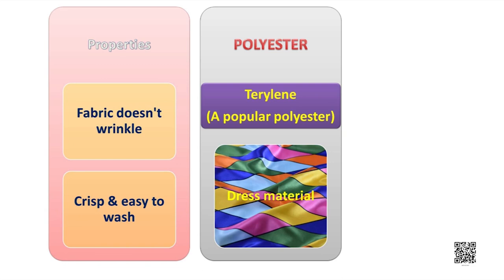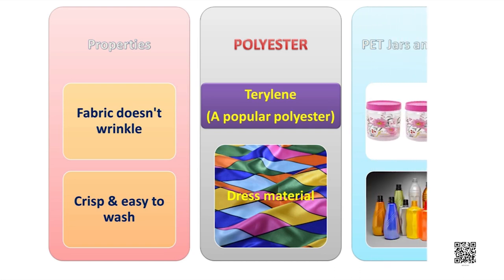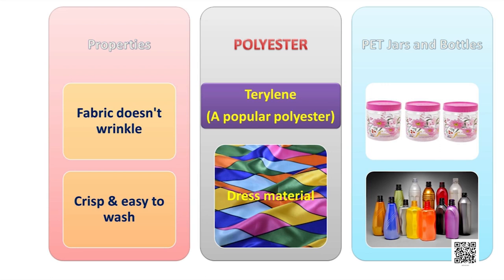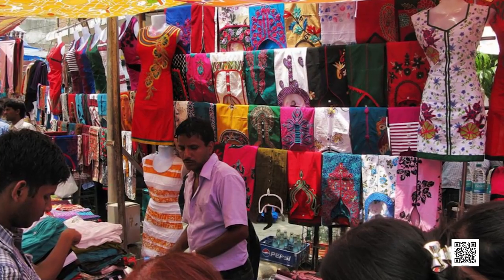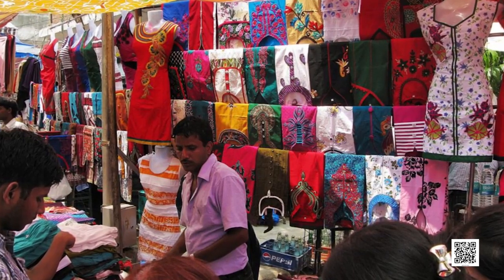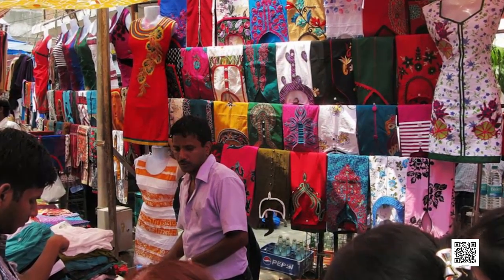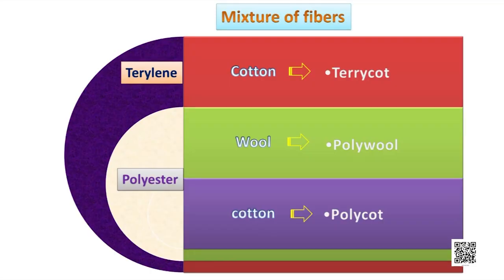An example of a popular polyester is terylene. Are you frequently using different PET bottles and jars? These are mainly used for storing miscellaneous items. PET is a very familiar form of polyester. In textile shops, fabric sellers introduce different types of cloth such as polycot, polywool, terrycot, etc. These are made by mixing two types of fibers — polycot is polyester and cotton, polywool is polyester and wool, and terrycot is terylene and cotton.